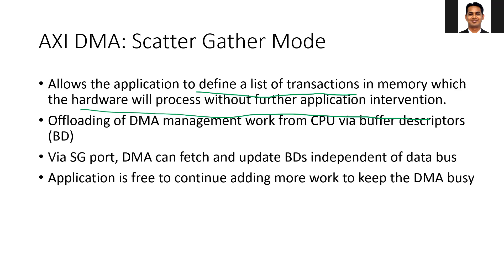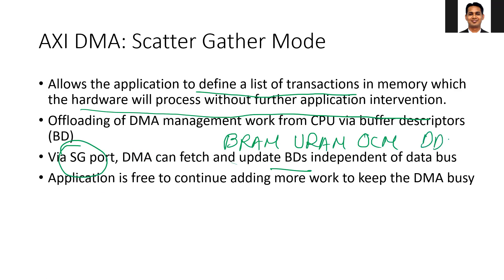To read the buffer descriptors, there is an additional memory map port added on the DMA, and this port should be connected to the memory where the buffer descriptors (BDs) are stored. You can store BDs in block RAM, U-RAM, on-chip memory, or DRAM — any memory can be used. From the application point of view, the application can keep updating the buffer descriptor to give additional work to the DMA. You can have different states: buffer descriptors under process or completed. After completion, the application can update the buffer descriptor with new information for a new transfer.